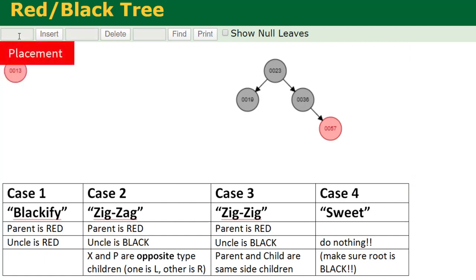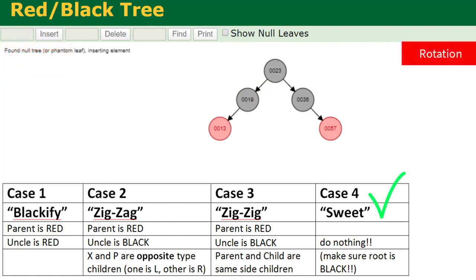Next number is 13. Go ahead and insert it. It's less than 23, less than 19, and put it in place. We do not have two reds in a row, so we get lucky for a change. You don't have to do a thing. Let's get our next number.